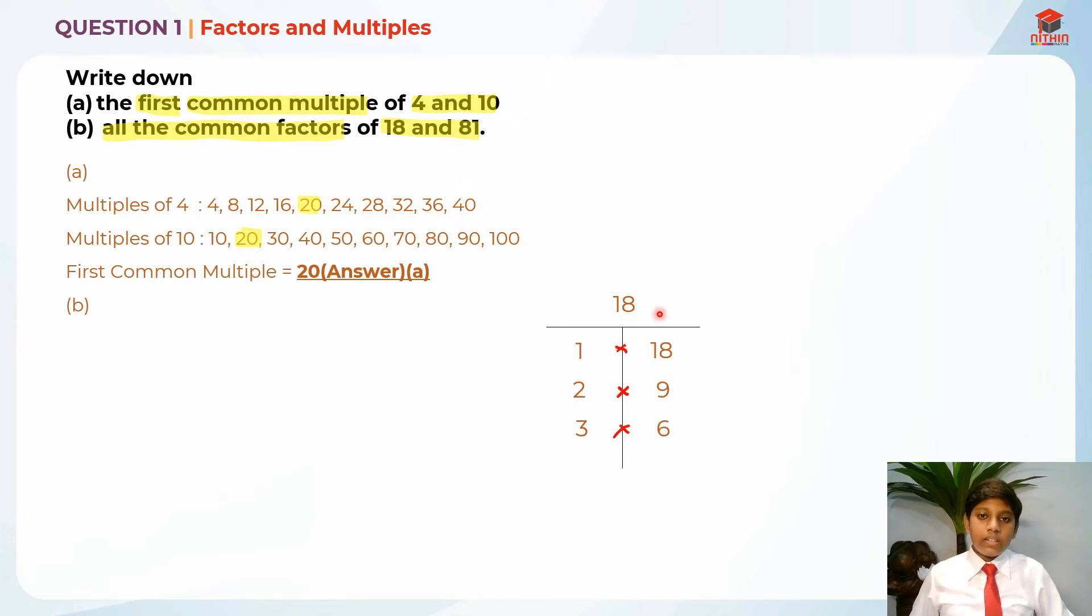Factors of 18. So 1 times 18 is equal to 18. So 1 and 18 are factors of 18. After that, 2 times 9 is equal to 18. So 2 and 9 are factors of 18. 3 times 6 is equal to 18 as well. So 3 and 6 are factors of 18. Now we move on to listing down the factors of 81.